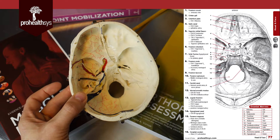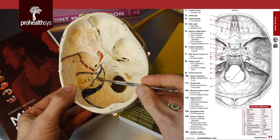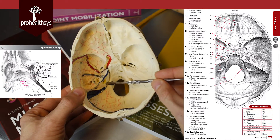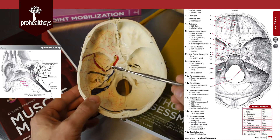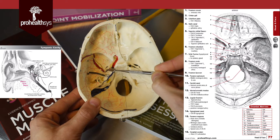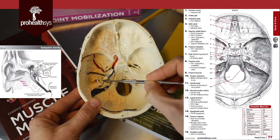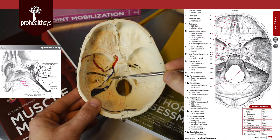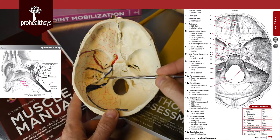The internal acoustic meatus is another very important structure, carrying the facial nerve (CN VII) and the vestibulocochlear nerve (CN VIII). Both run through into the middle ear. This is the petrous portion of the temporal bone, where your middle and inner ear are located — your malleus, incus, and stapes, as well as your cochlea and semicircular canals for hearing and balance. It's a hard area to dissect into, but worth finding.